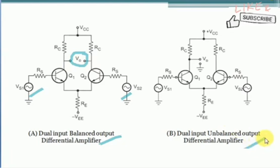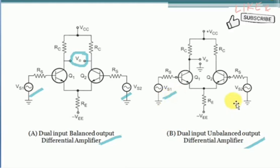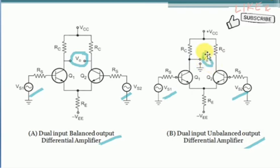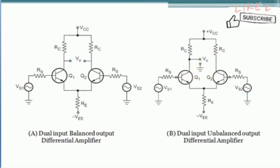The second configuration is dual input, unbalanced output. In this configuration, the two inputs are also applied to the differential amplifier circuit, but the output is taken across one collector terminal with respect to ground.